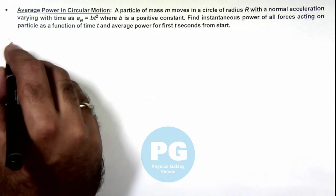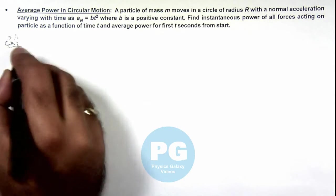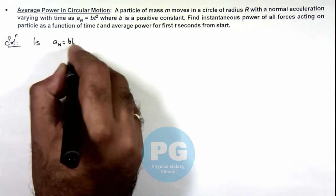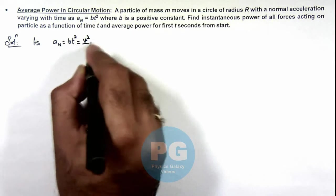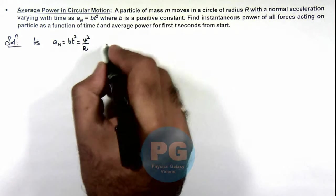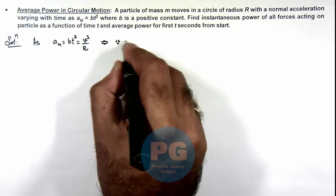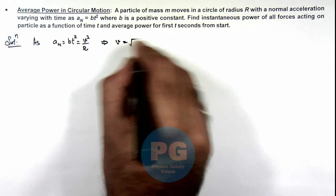Here in this situation we can see, as normal acceleration is given as bt², this can be written as v²/r at any instant. This implies the speed of particle at any instant of time can be given as root bRt.